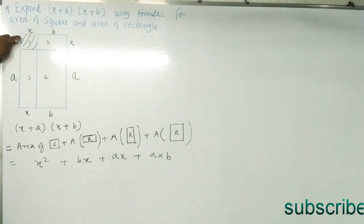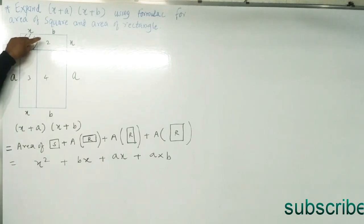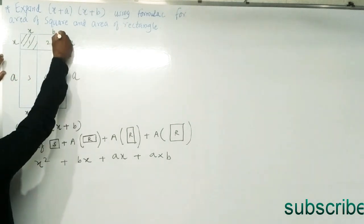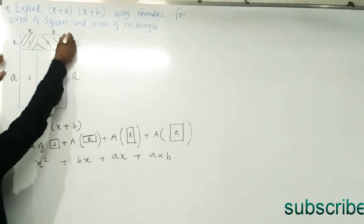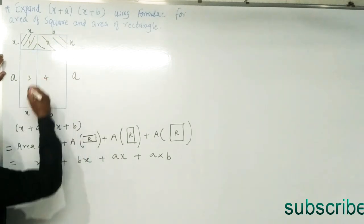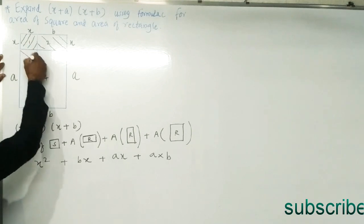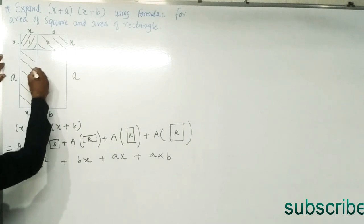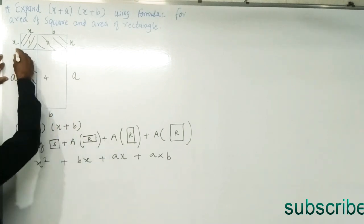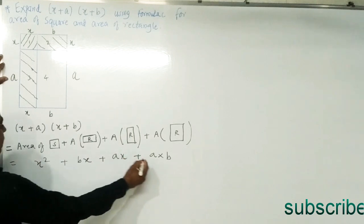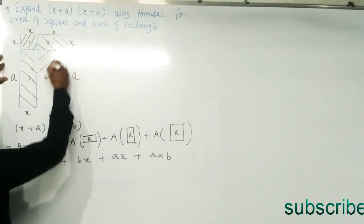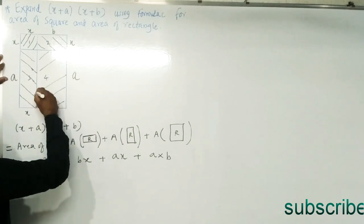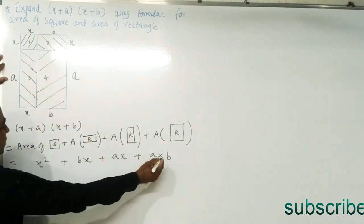Once again: the shaded square part is side squared, so x squared. Then the area of the first rectangle is length into breadth: b into x, giving bx. The third part, the area of the next rectangle, is a into x, giving ax. And the 4th part, the area of the big rectangle, is a into b.